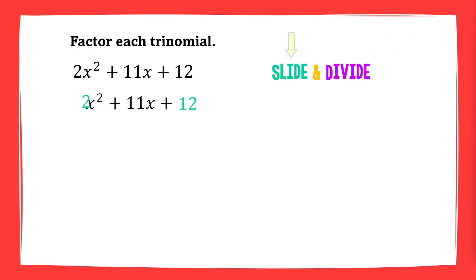First, to slide means to slide the coefficient of x squared to the constant term and multiply them. We get x squared plus 11x plus 24.